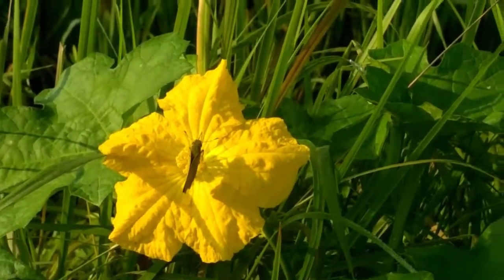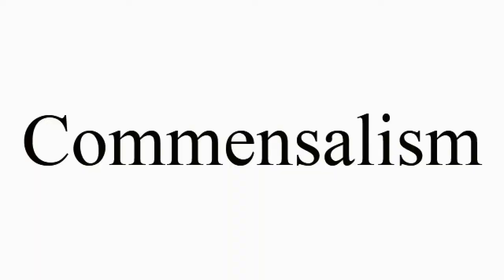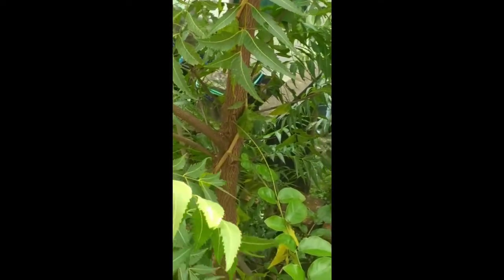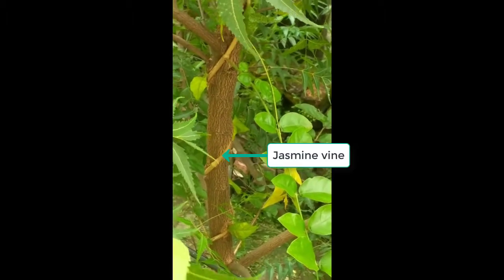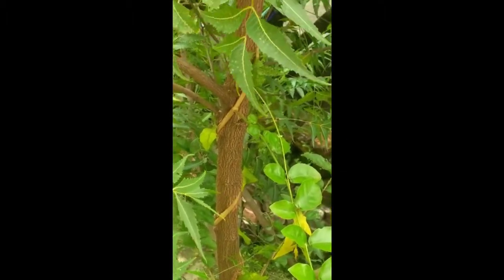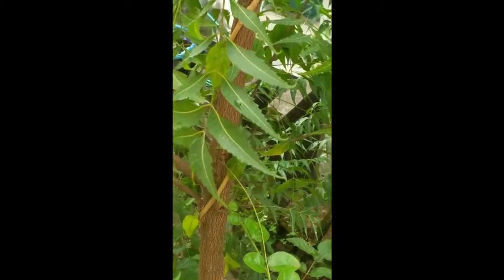The next type of symbiosis is commensalism. As you can see in this example, this is a neem tree which is being used as a support for growing by a vine of jasmine flower. This vine is winding itself upwards to find support, and this does not harm the neem tree nor does it benefit the neem tree.